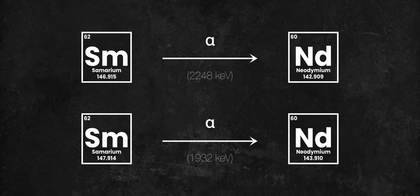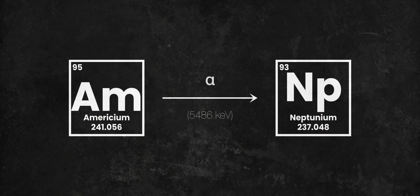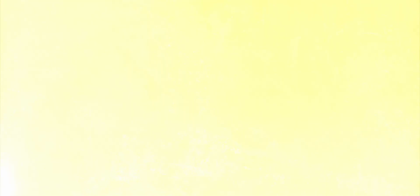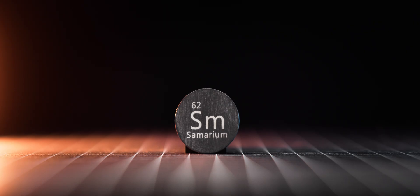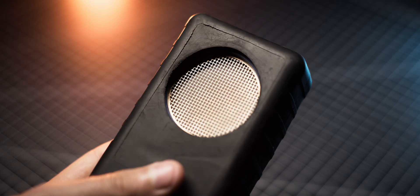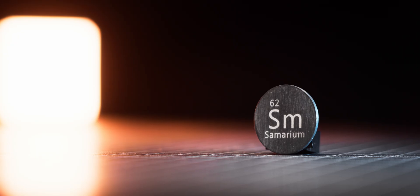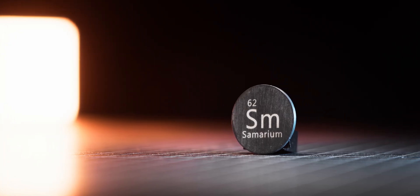This is because both Samarium 147 and Samarium 148 emit very low energy alpha particles at 2,248 keV and 1,932 keV respectively. For comparison, Americium 241 emits alpha particles with an energy of 5,486 keV. Such low energy means that the alpha particles are stopped by air very quickly and don't have enough energy to pass through the micro-window of the LND 7317 Geiger-Müller tube.